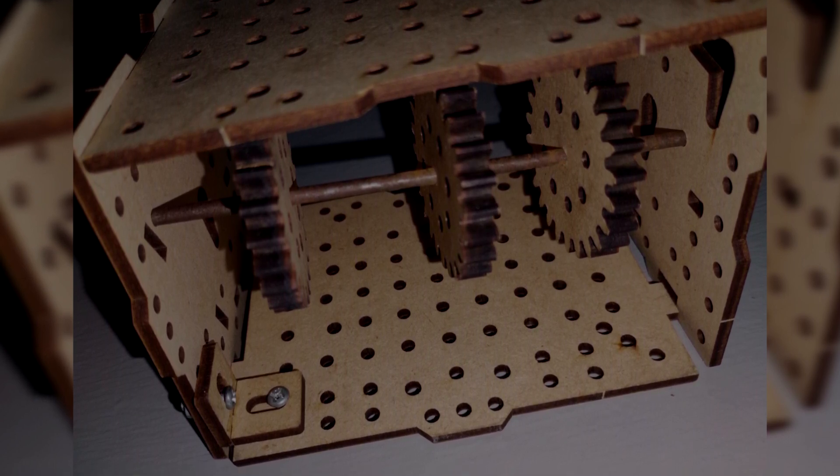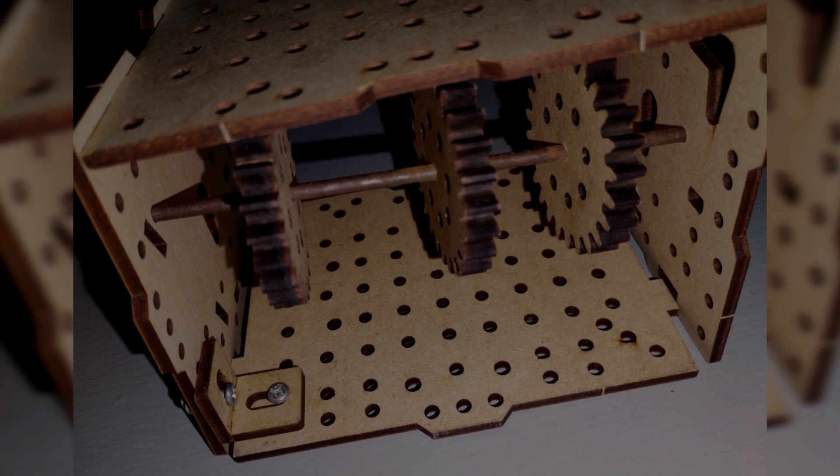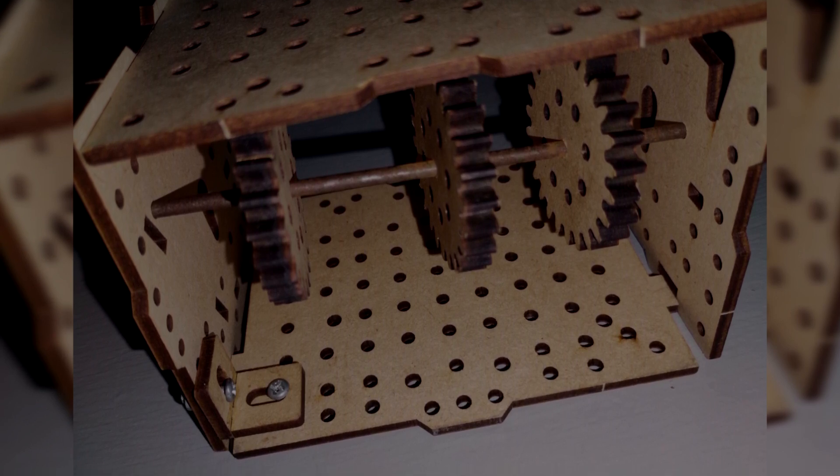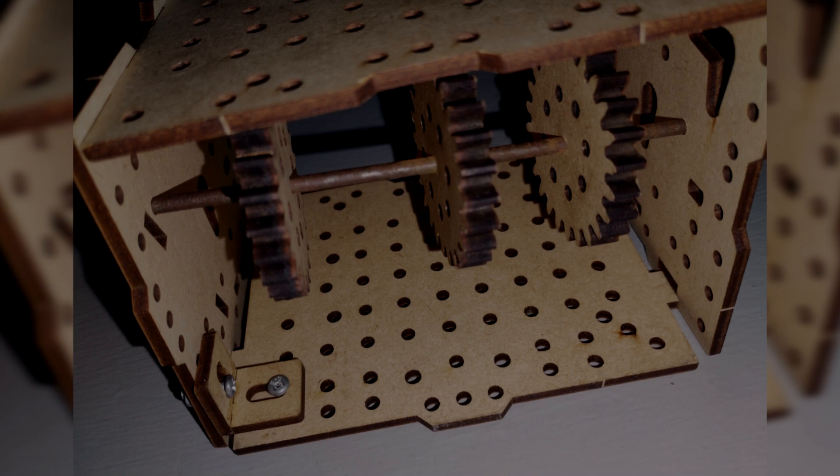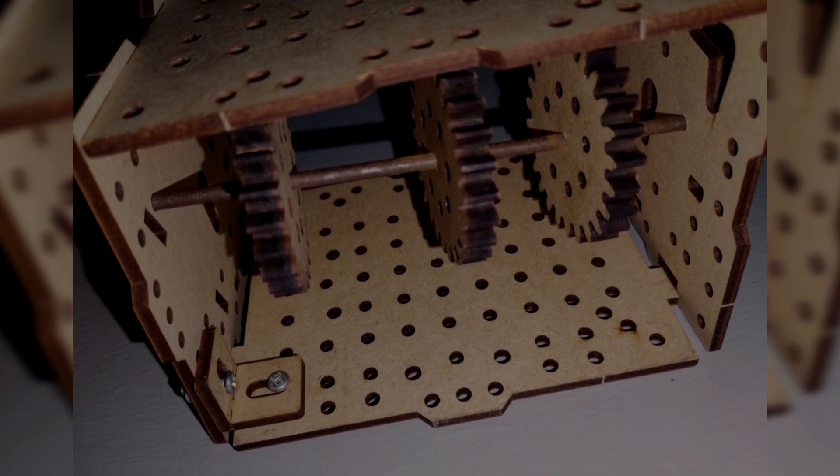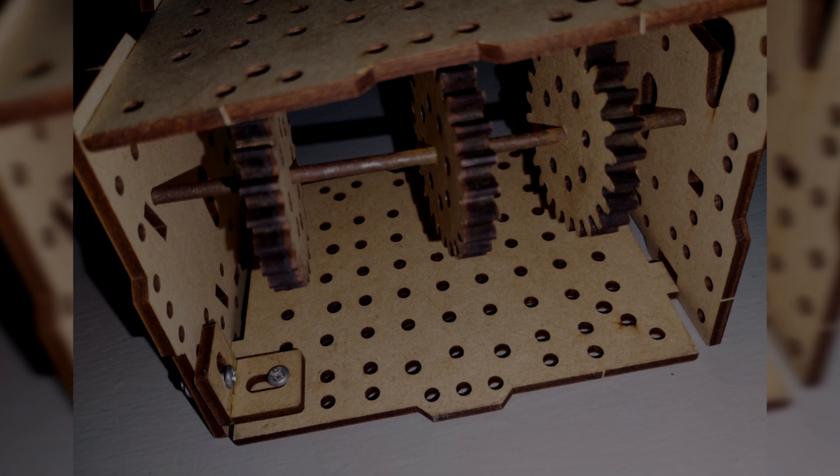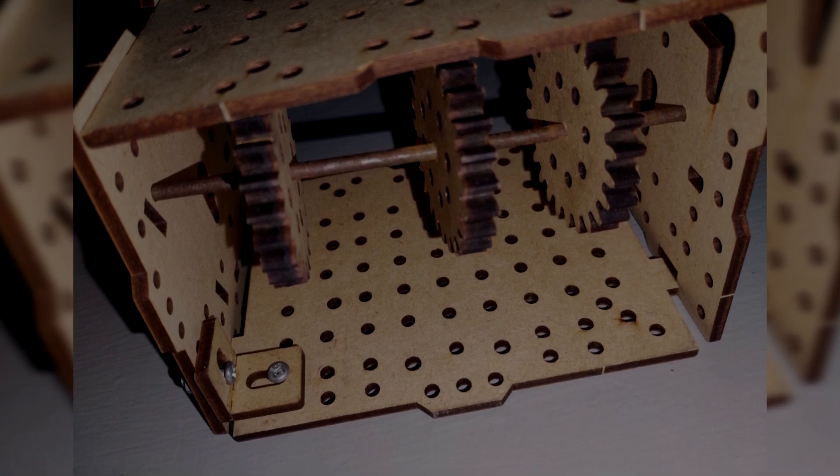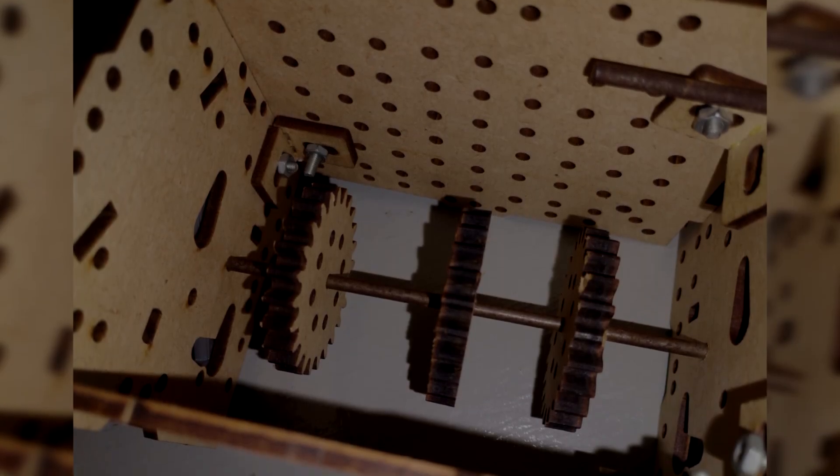Vamos a formar el sistema de engranajes: dentro de nuestra pequeña estructura vamos a tener tres engranajes medianos, y por fuera vamos a tener otros tres engranajes: uno chico, uno mediano y uno grande. Es decir, vamos a tener piñón, corona y engranaje loco.